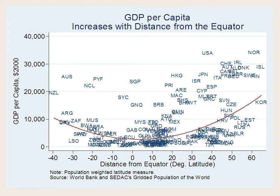This graph shows something quite remarkable: GDP per capita increases with distance from the equator. And this is not just a Northern Hemisphere effect — it happens in the Southern Hemisphere as well. You can see here the United States, Japan, Canada, Italy, France, and so forth — these are all rich countries in the Northern Hemisphere.